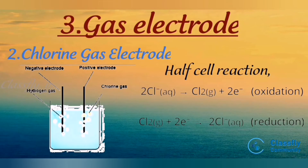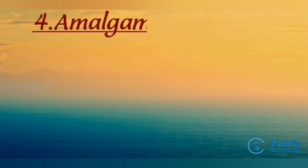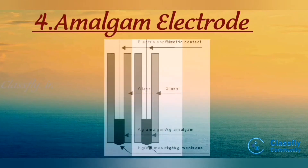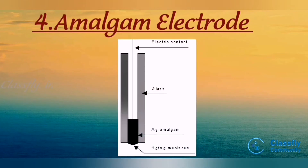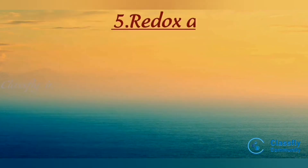The fourth type is the amalgam electrode. A metal amalgam is in contact with the solution containing its own ion. Sometimes when a metal is highly reactive, it is more convenient to use the metal in the form of an amalgam. The activity of the metal is lowered by dilution with mercury.